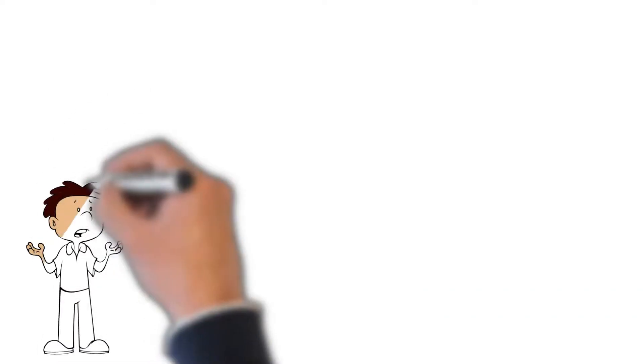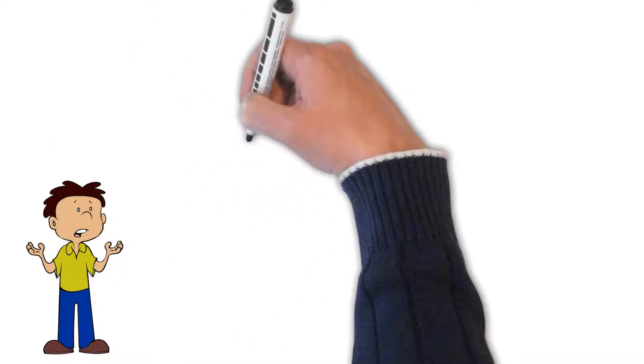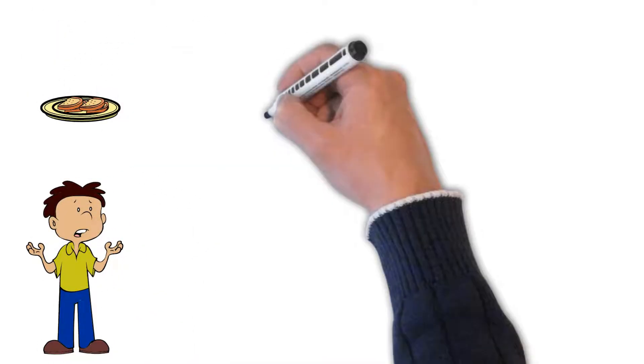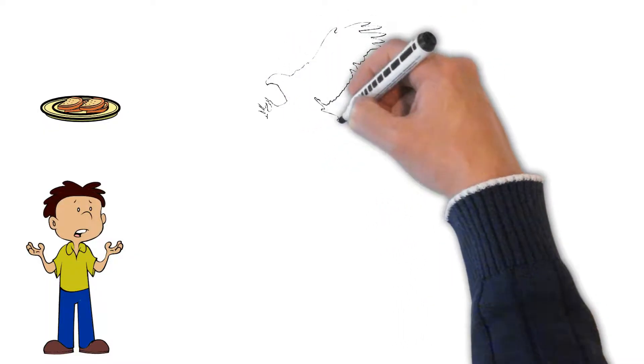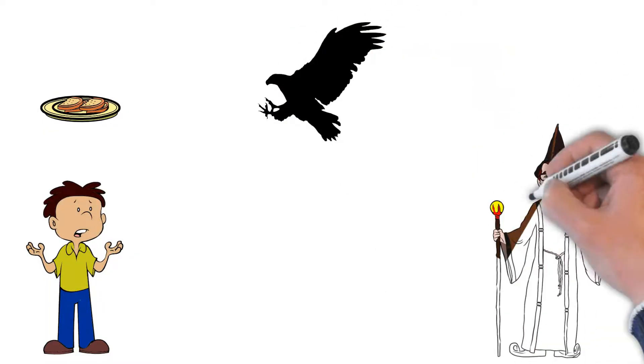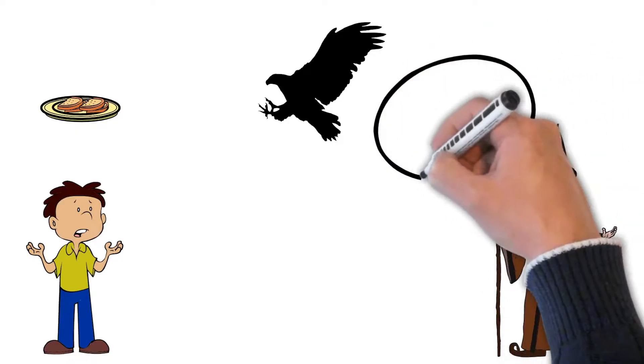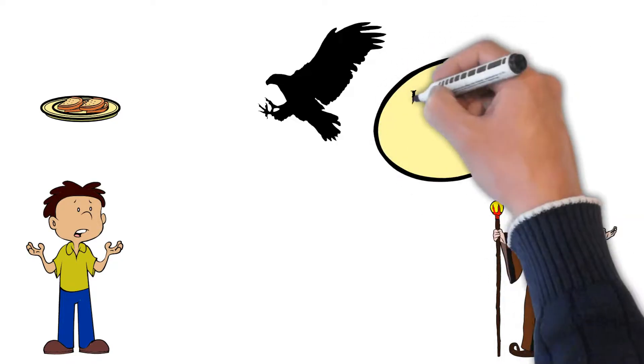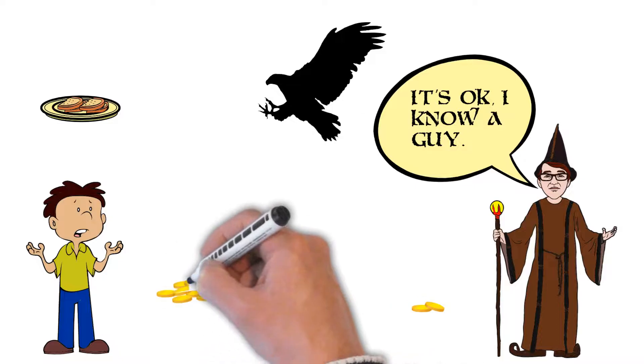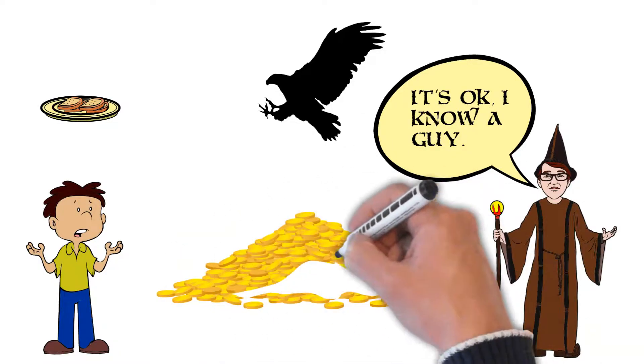Bilbo awoke with a start, realizing he was far from his cozy hobbit hole. He ate a meager breakfast before taking flight on the back of an eagle with the dwarves. They landed on a hill of stone, and Gandalf informed them that they had veered off course. But fear not, for he knew of someone who lived nearby, and suggested they seek him out.